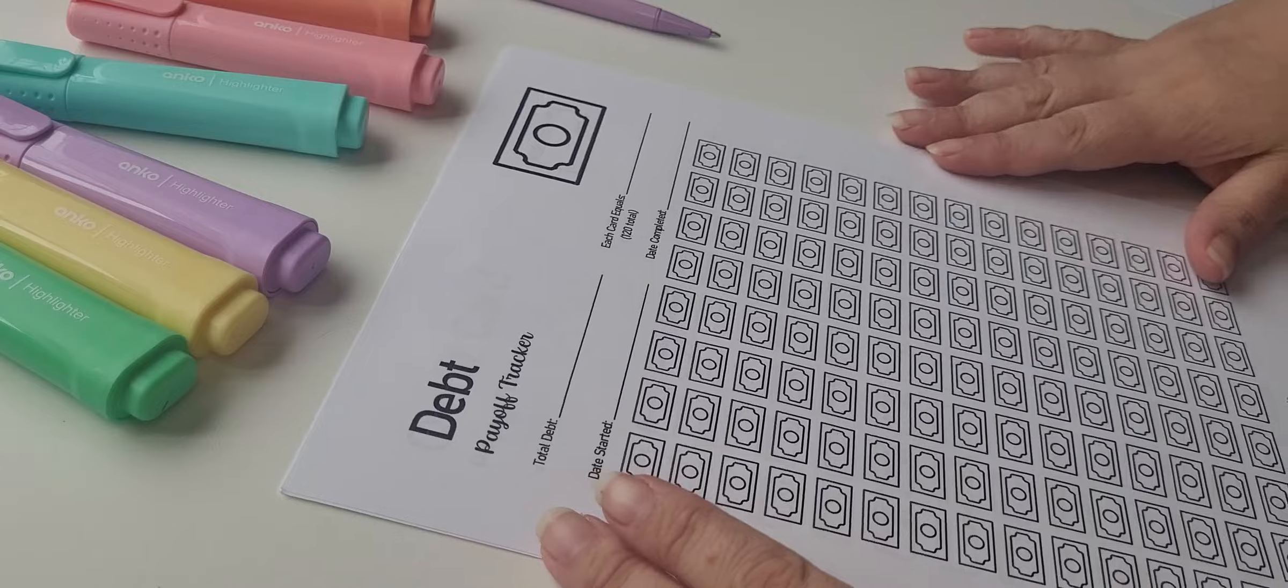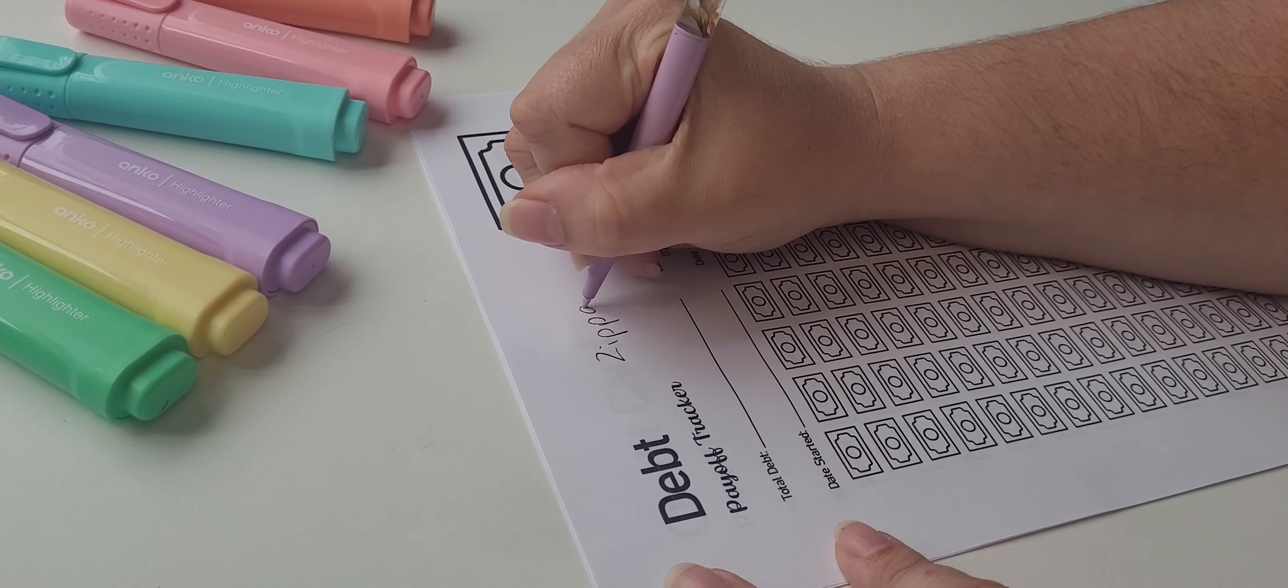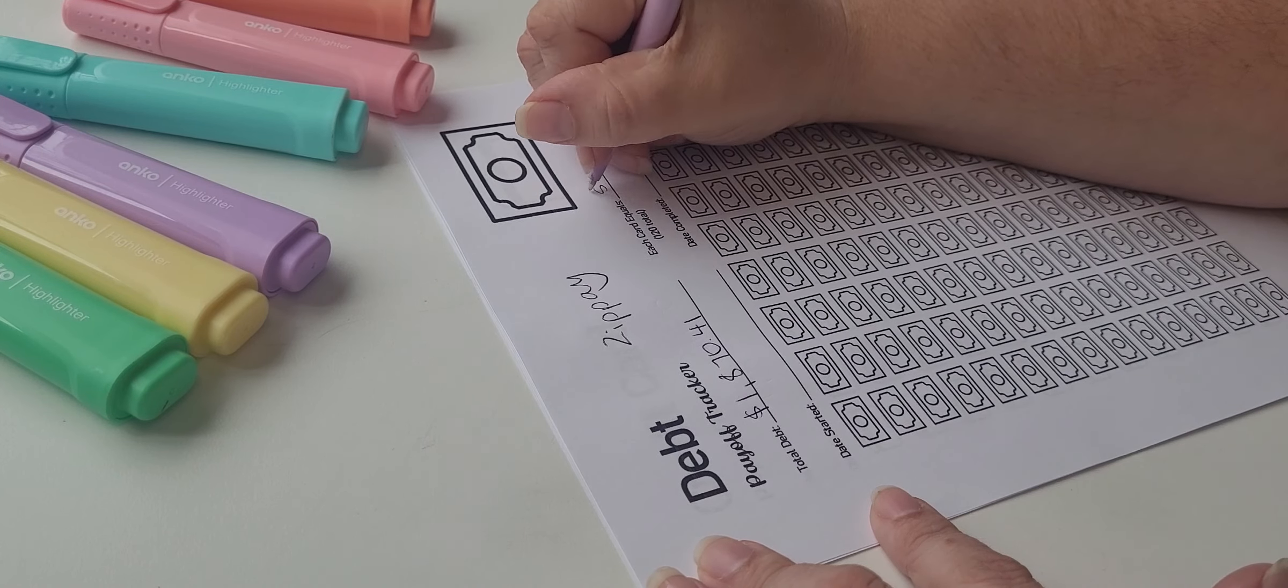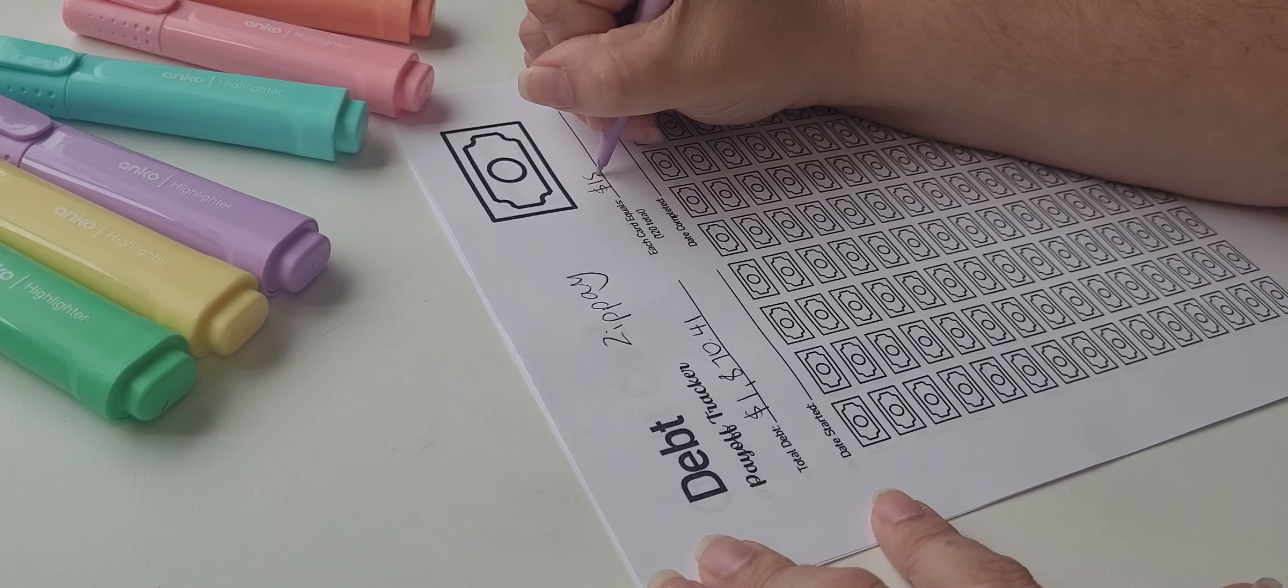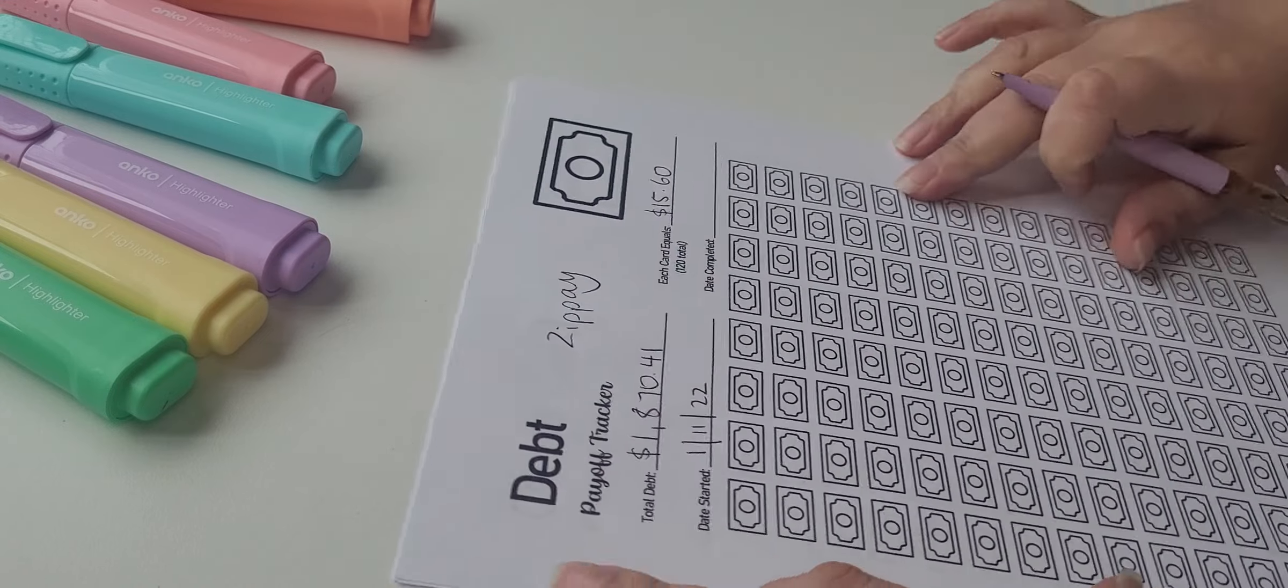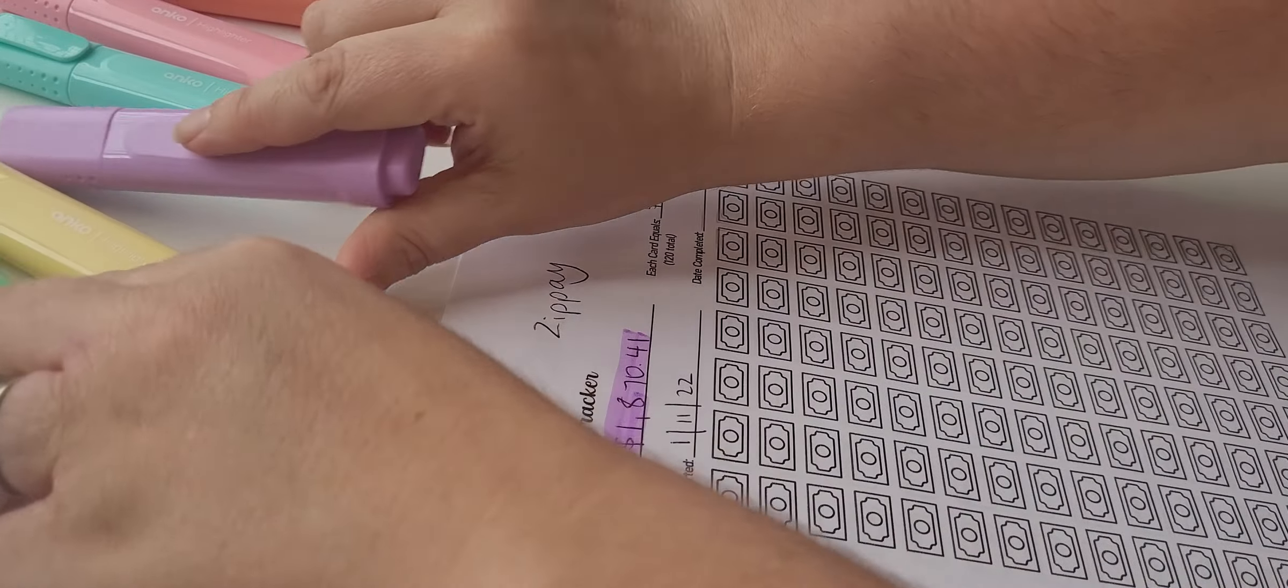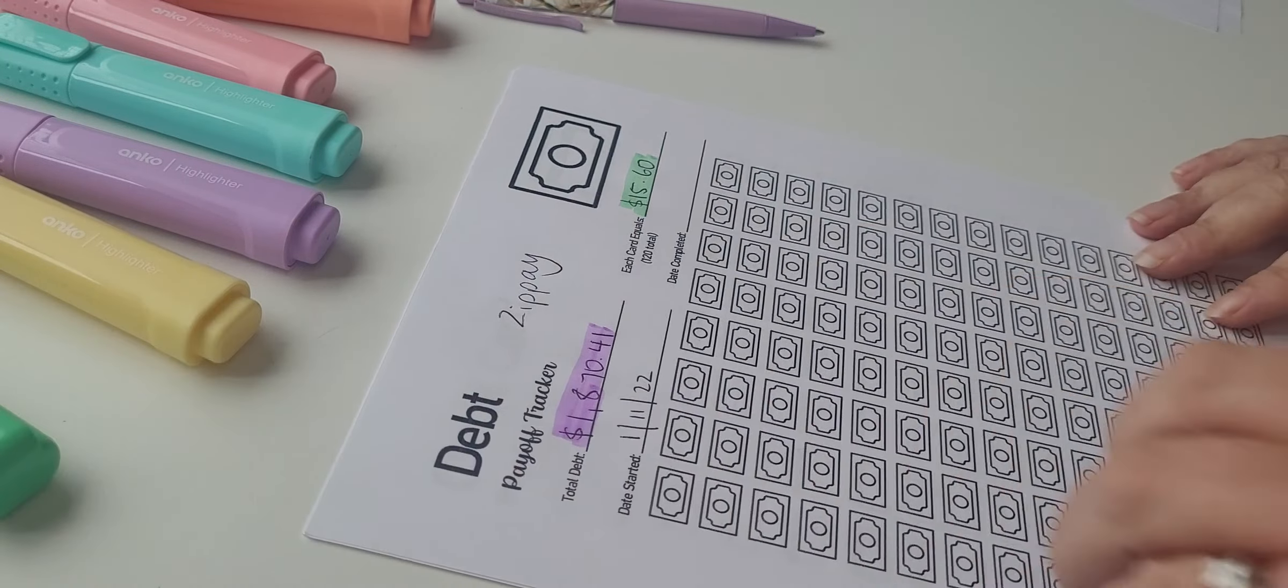So here we go. The first debt is zip pay because that's our smallest. I'm just going to write it right here. Zip pay. The total we owe is $1,870.41. And again, I'm dividing it by 120, which is, let me find it, $15.60. And I start at the first of the 11th. 22nd. So that's that. Let me color some in. I just like color. It makes me happy. It makes me want to do it. So I'm doing it this way. You don't have to do this. It is an extra step, but I just think it looks so cute.